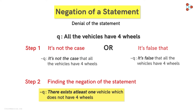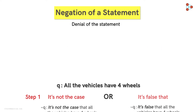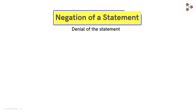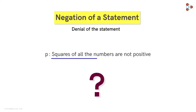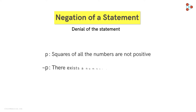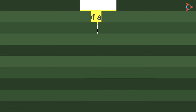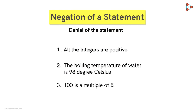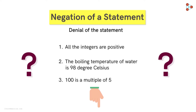Let's take one more example for better understanding. What will be the negation of this statement? Here, we are talking about a group of numbers. Hence, the negation would be: There exists a number whose square is positive. Let me give you a few more examples to work on — leave your answers below. And in the next video, we will see what compound statements are.